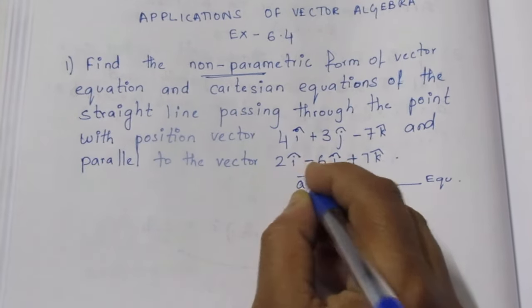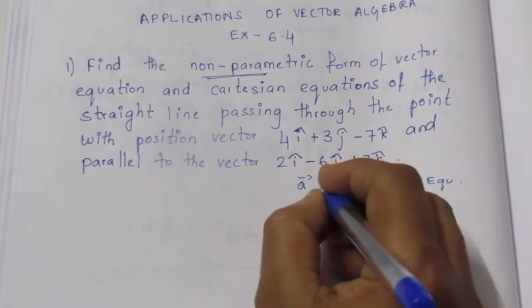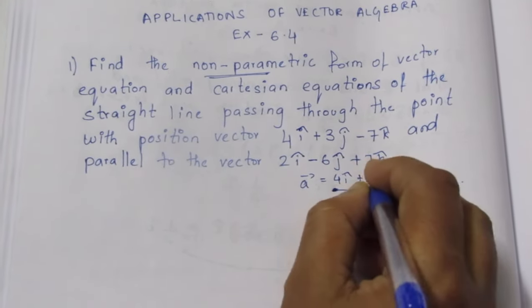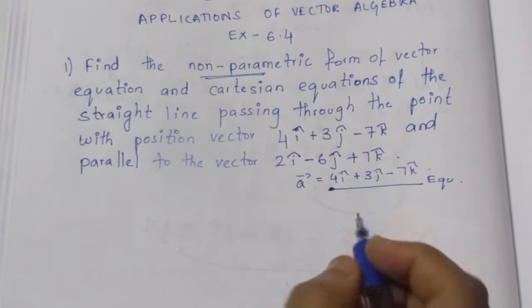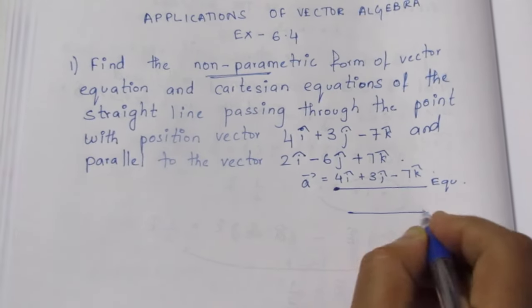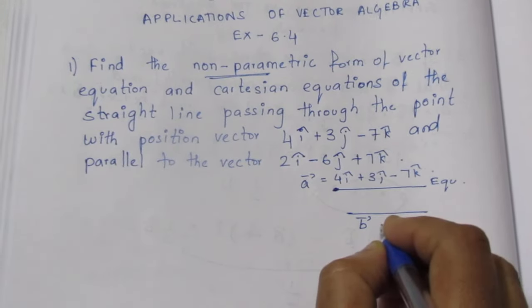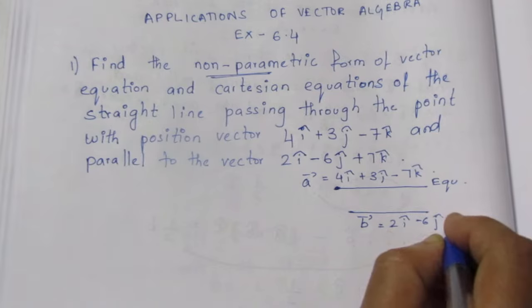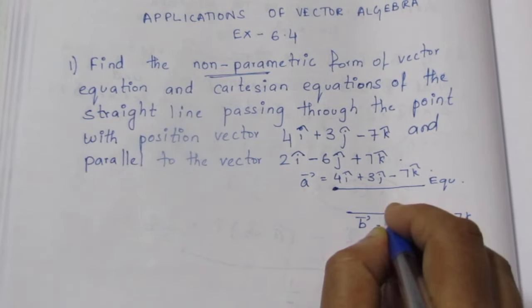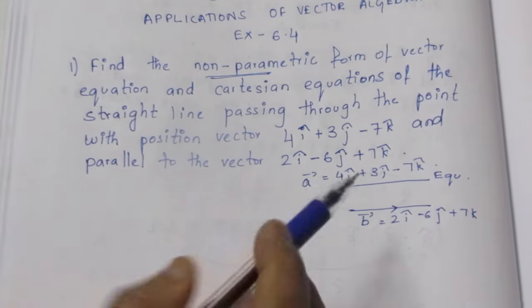You can find a vector, you can find a point. 4i cap plus 3j cap minus 7k cap and parallel to the vector. This is usually b vector. This is the vector: 2i cap minus 6j cap plus 7k cap. This is parallel to the vector.